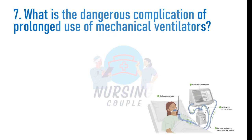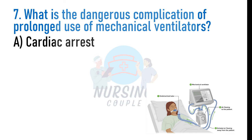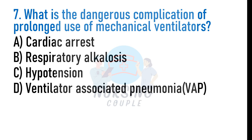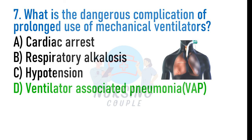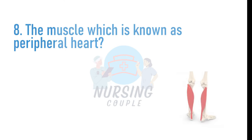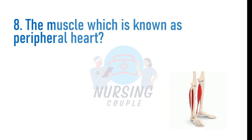What is the dangerous complication of prolonged use of mechanical ventilators? A. Cardiac arrest, B. Respiratory alkalosis, C. Hypotension, D. Ventilator-associated pneumonia. The answer is D: Ventilator-associated pneumonia. VAP or ventilator-associated pneumonia is defined as pneumonia occurring more than 48 hours after the patient has been intubated and received mechanical ventilation.